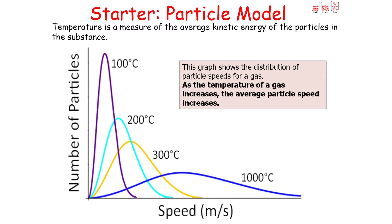This distribution shows us a few key ideas. First, as the temperature of a gas increases, the average particle speed also increases. Second, as the temperature increases, the average kinetic energy of the particles also increases. And finally, as the temperature increases, the distribution or spread of particle speeds also increases — there will be a bigger difference between the fastest and slowest moving particles in the gas.